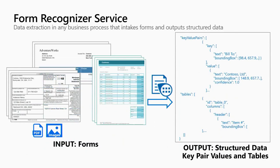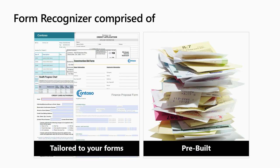Form Recognizer takes forms as input and outputs a structured JSON containing key-value pairs and tables, including keys, bounding boxes, values, and confidence scores per key-value pair and table. The bounding boxes can be used to overlay back and reconstruct the form. Confidence scores let you immediately transfer high-confidence results to your system, while lower-confidence results can be routed to human validation.